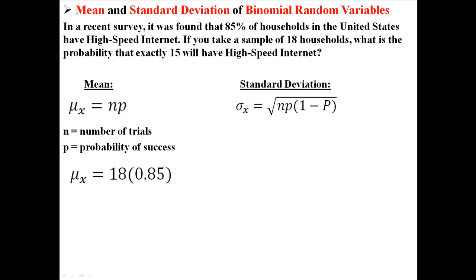So if we want to find the mean, we just take N times P and find a mean of 15.3. And if we want to find the standard deviation, we just plug in the N and the P and we simplify that down to find a standard deviation of 1.515.